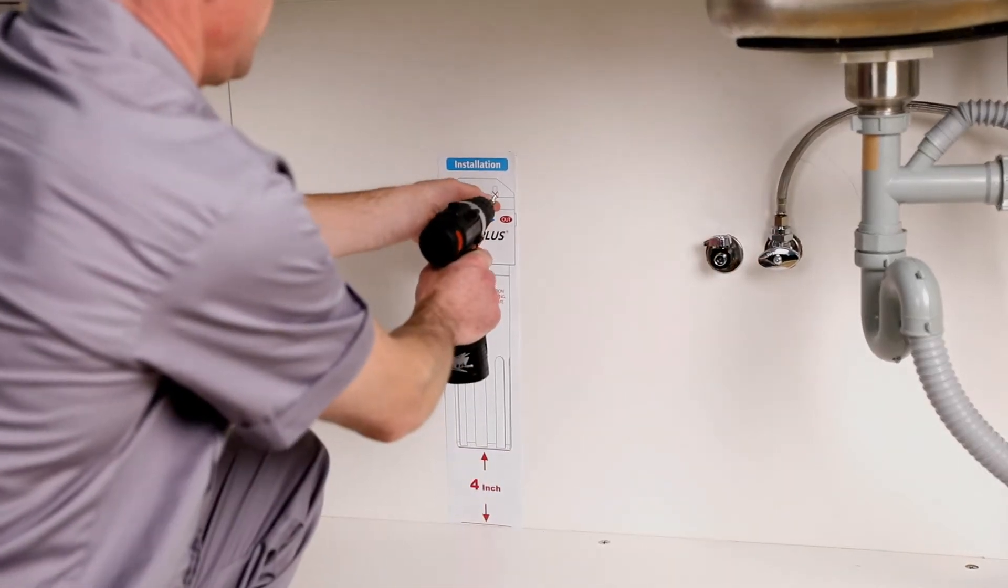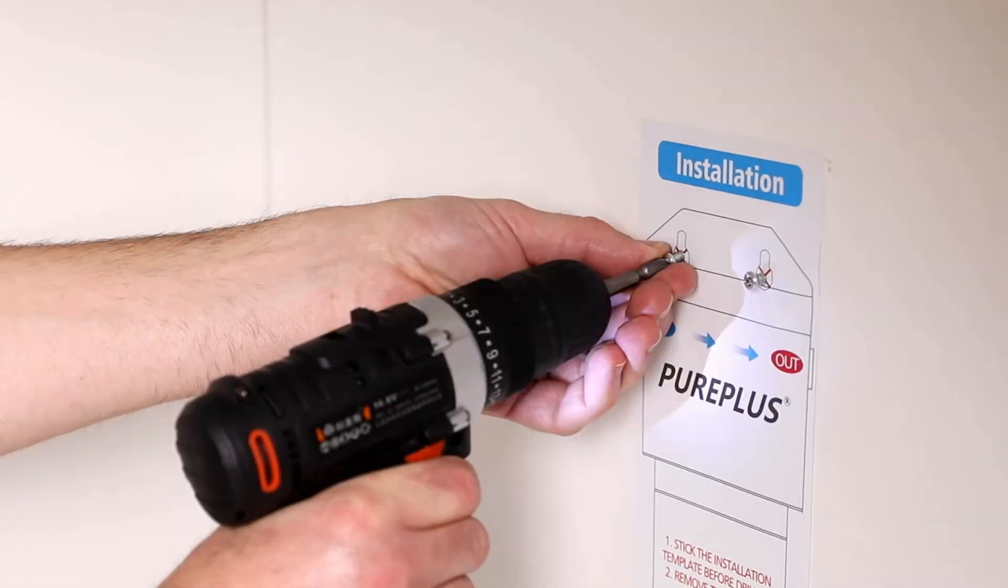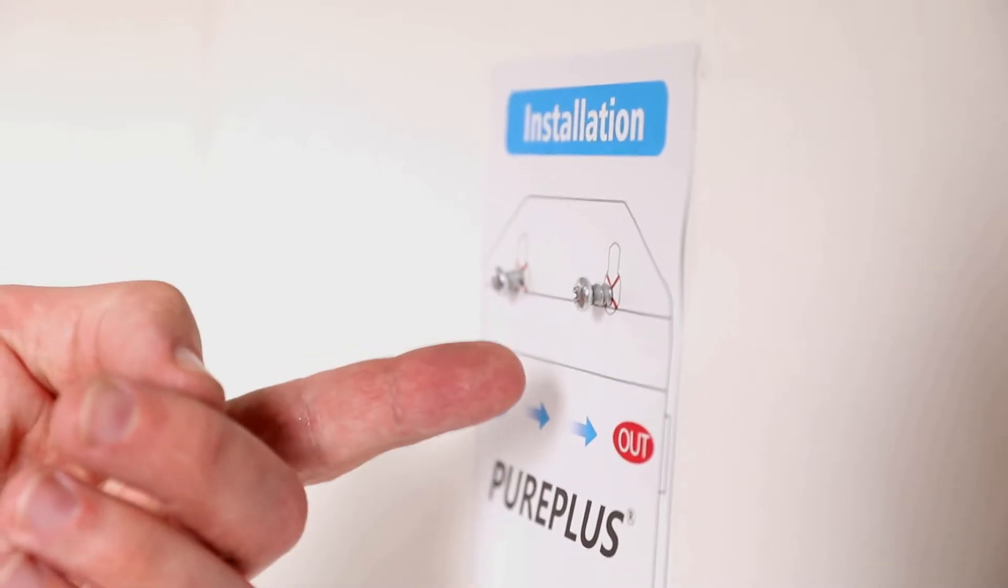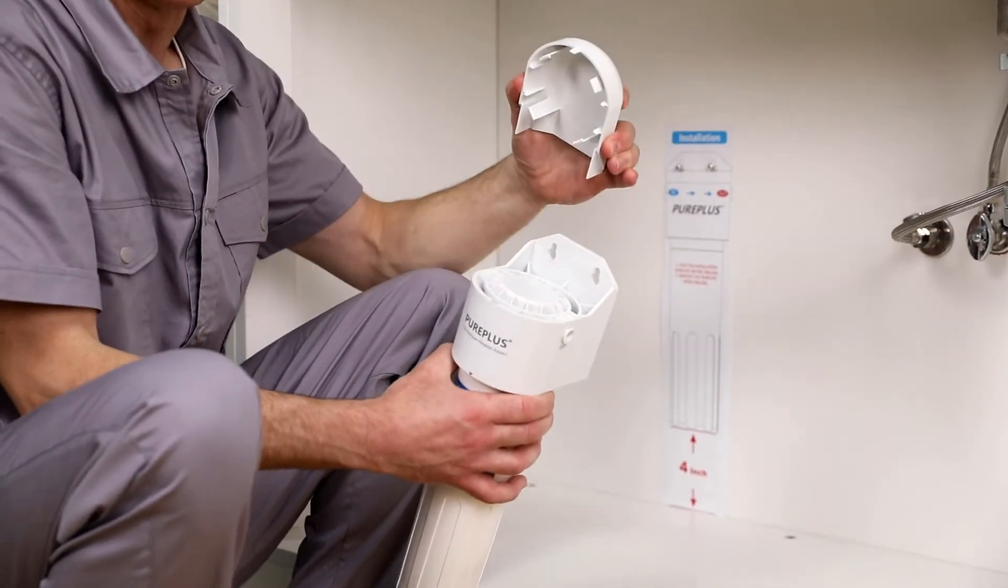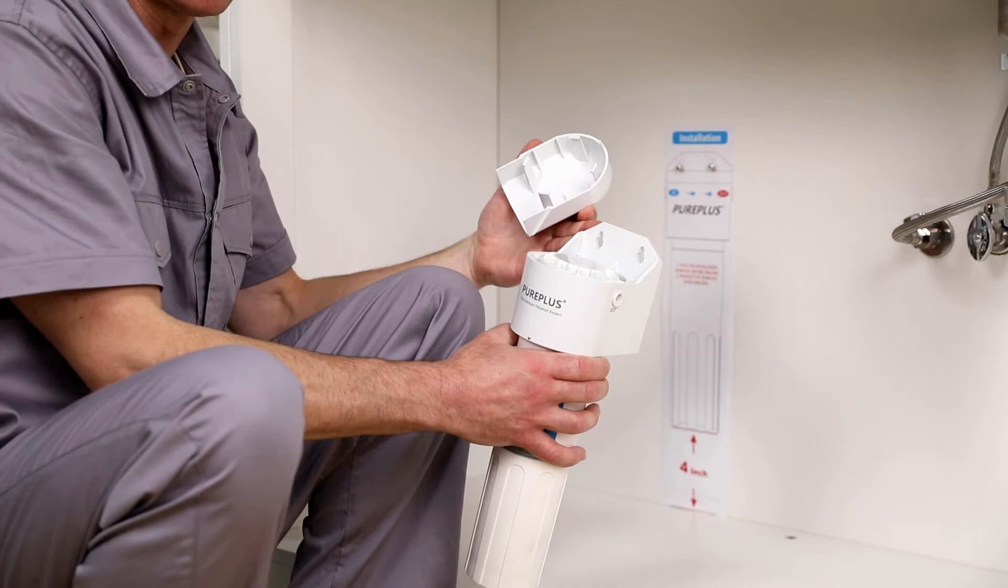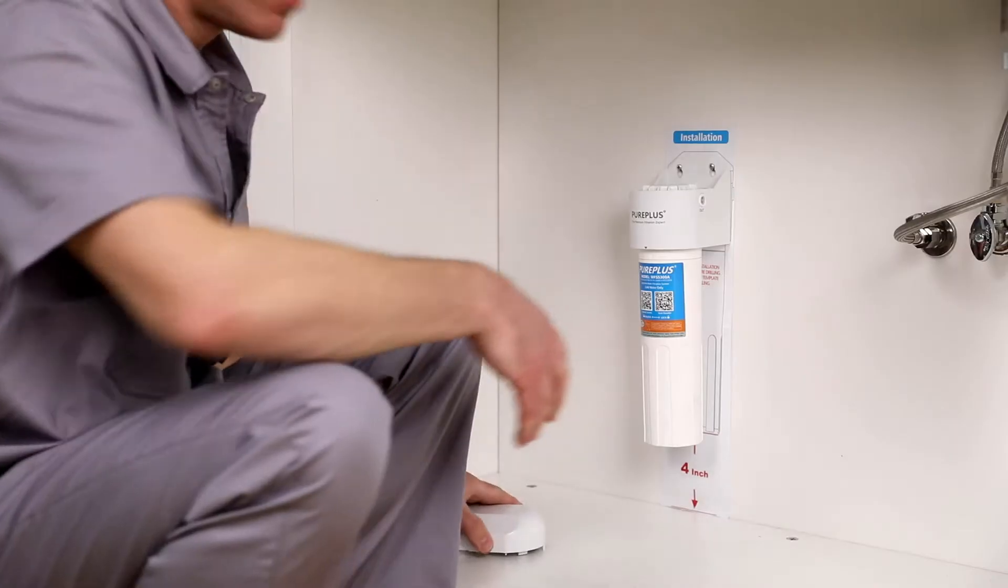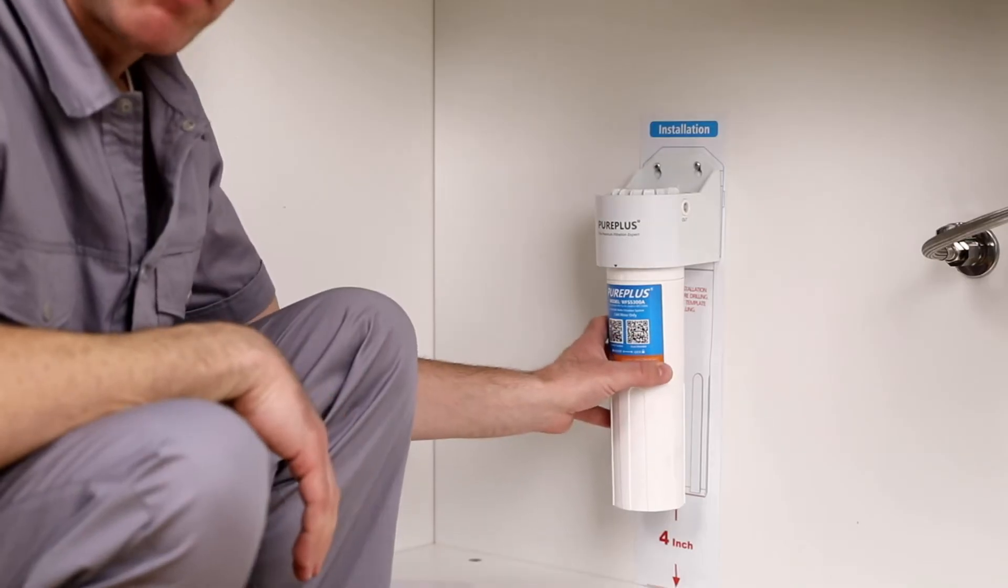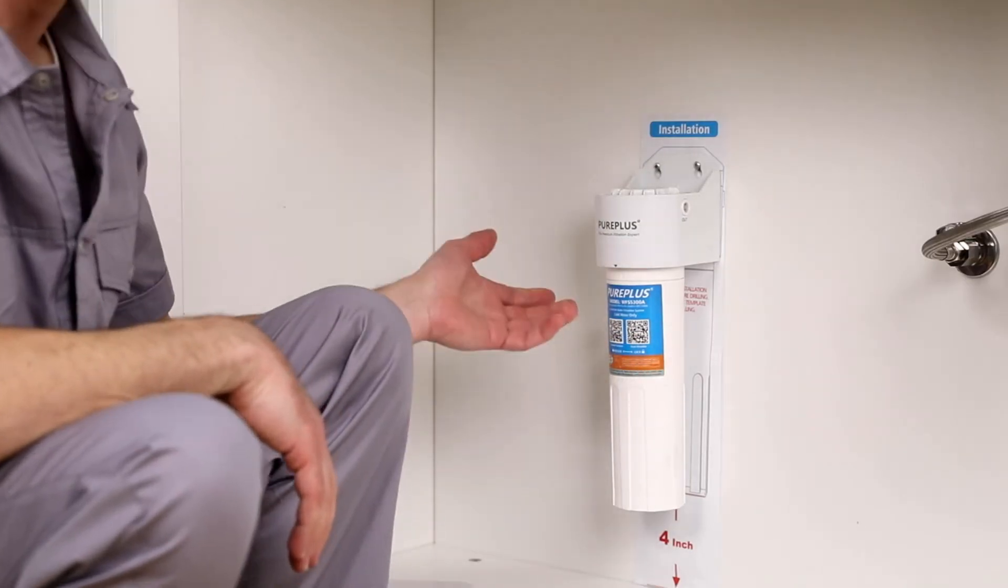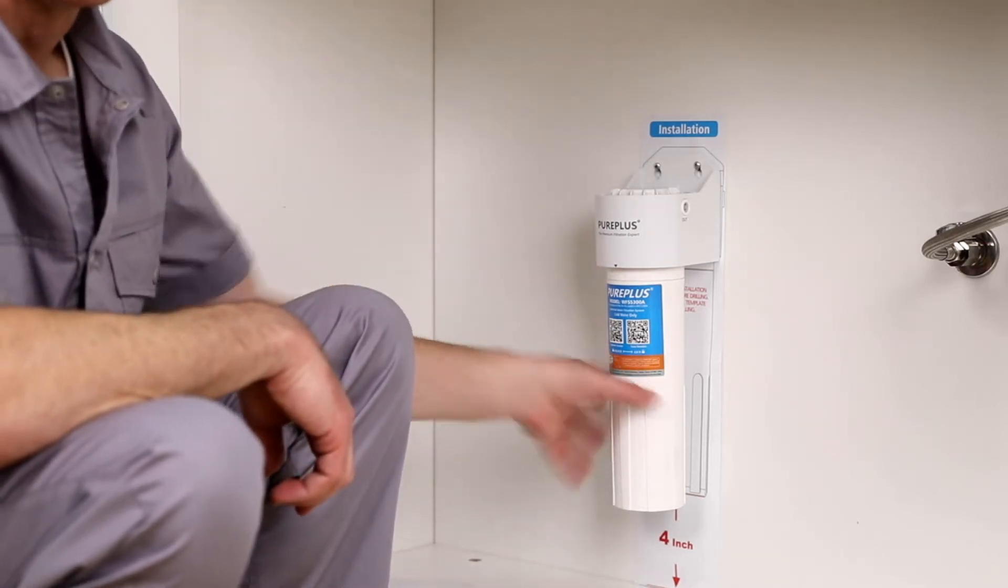Let's check if the drilling is successful. Squeeze the lid to release. Align the two large holes of the system with the two screws. Hang it. Press down slightly. Wiggle the system back and forth slightly. If it shakes, drive the two screws deeper. If it doesn't move, the drilling is successful.